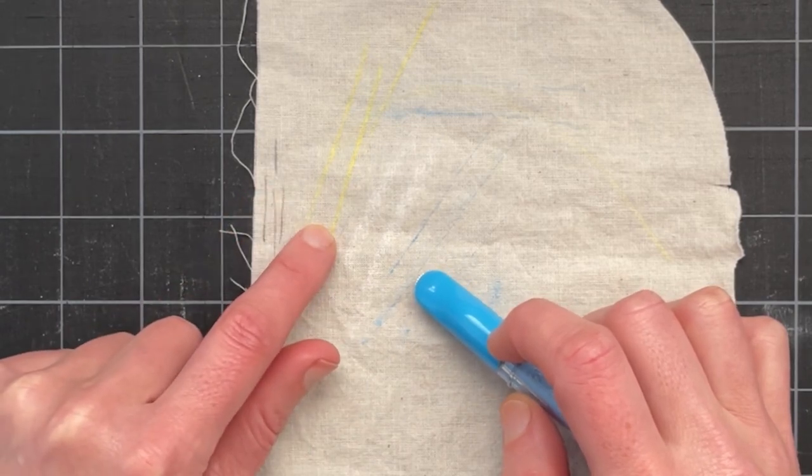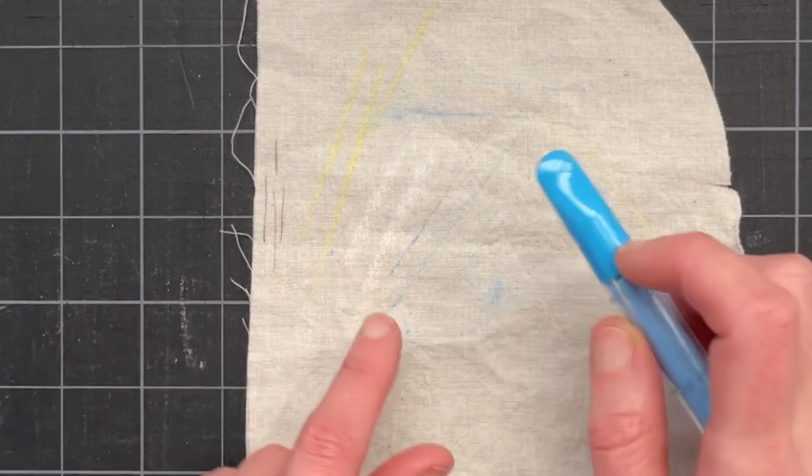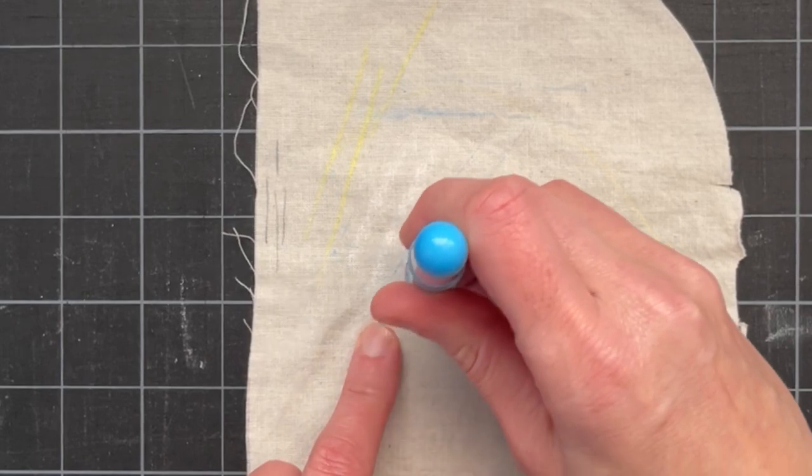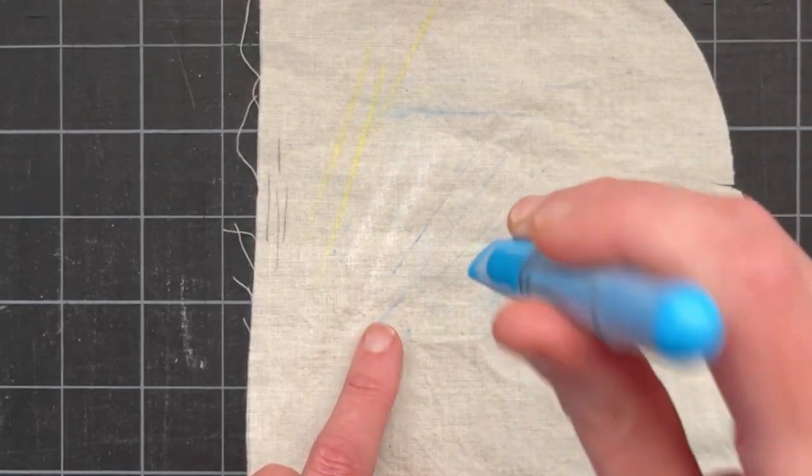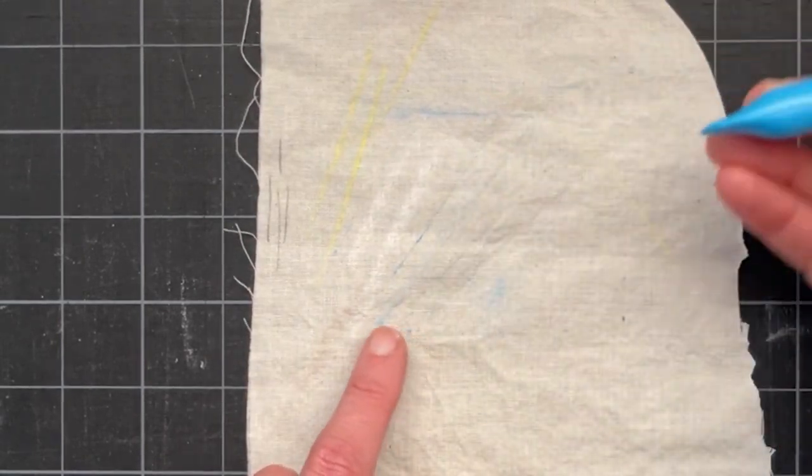The great thing about it is that it draws a really sharp thin line. You can see my dressmaker's chalk is kind of a medium line. The regular chalk is pretty thick but this choco liner makes a really thin line. You just need to press down a bit to make it work.